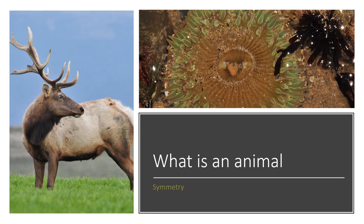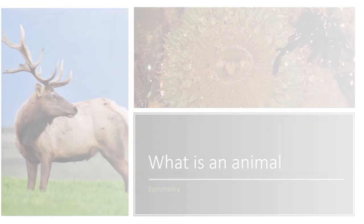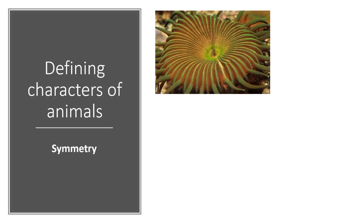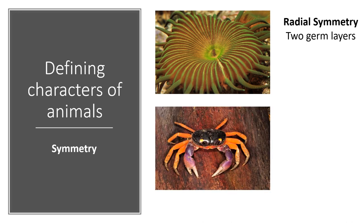Typically, if you have two germ layers — an endoderm and an ectoderm — you have radial symmetry. Whereas most animals with bilateral symmetry have all three germ layers: the ectoderm (outer layer), the mesoderm (middle layer), and the endoderm (innermost layer).